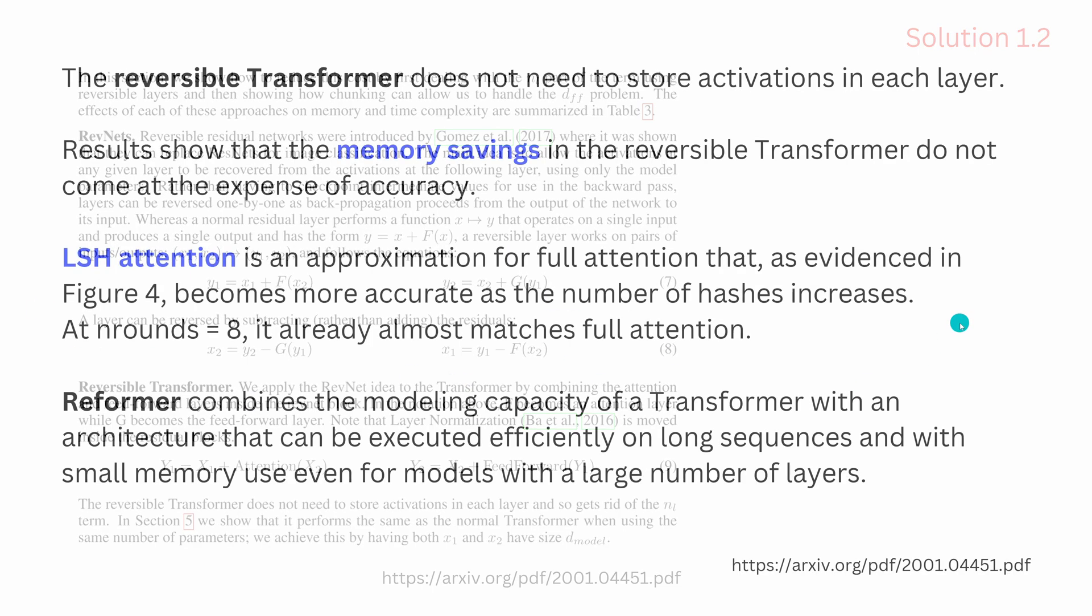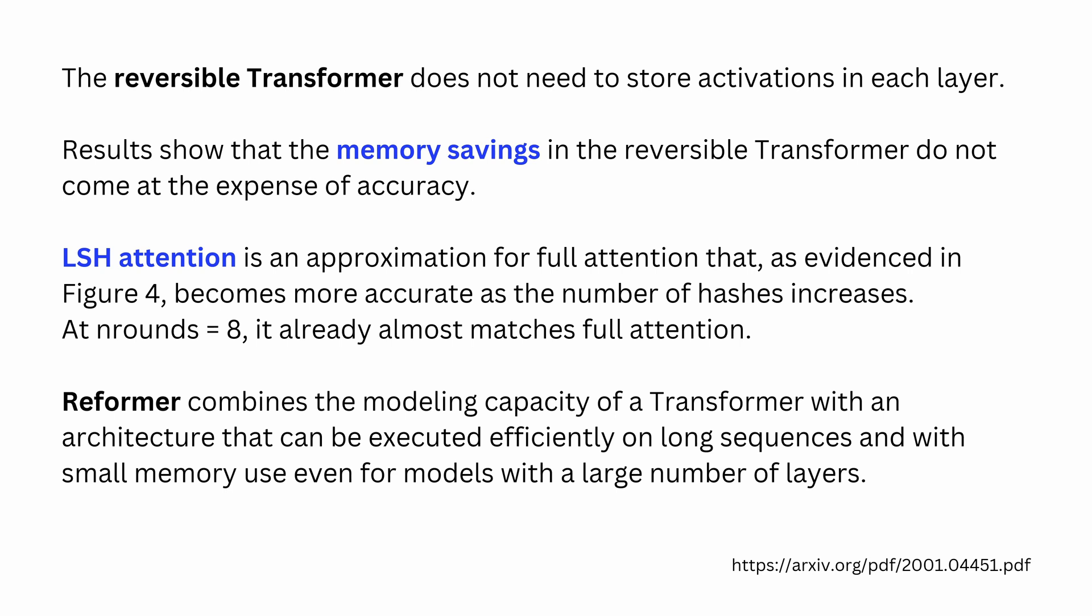So beautiful, reversible transformer. You can read this yourself, no problem. So what have we achieved now? One of the beauties is that suddenly we do not need to store as many activations as before for each layer. And this shows that the memory savings into reversible transformer do not come with any expense of accuracy. So if you had before 10 out of 10, now you have, as an idea, 9 out of 10 for your accuracy, but you have significant memory savings.